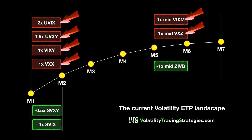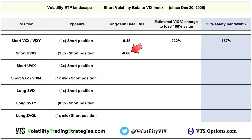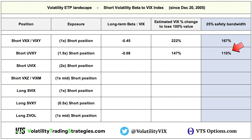Now let's go through the rest of the volatility landscape. UVXY is 1.5 times leveraged and its beta to the VIX is 0.68, so it moves more than VXX. If you're short UVXY, long term it would only require a 147% VIX spike to crush that position. Using our safety bandwidth, we're talking roughly 110% for the danger zone — that's a lot, but it can happen.